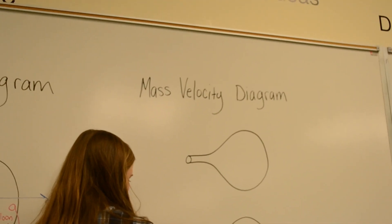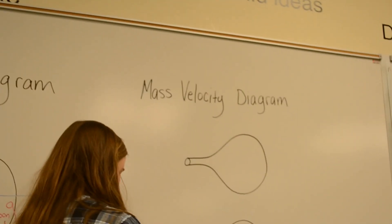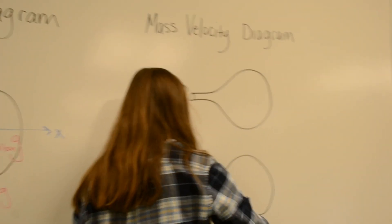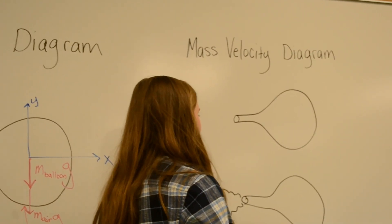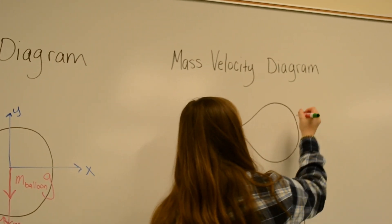Now that we're done with our free body diagram, let's work on our mass velocity diagrams. We're going to draw two different ones, one for the initial system and one for the system after I release.